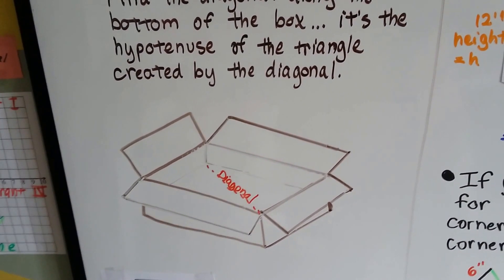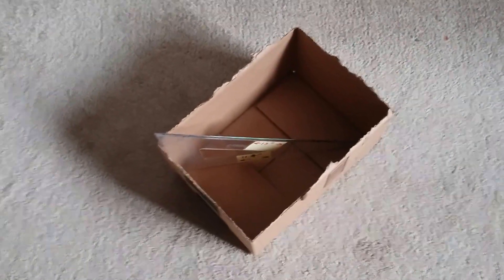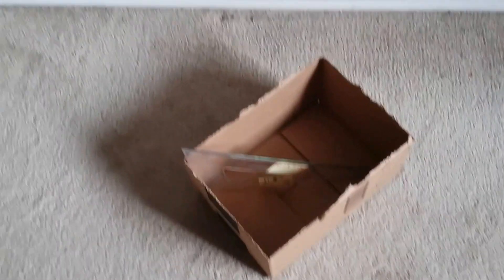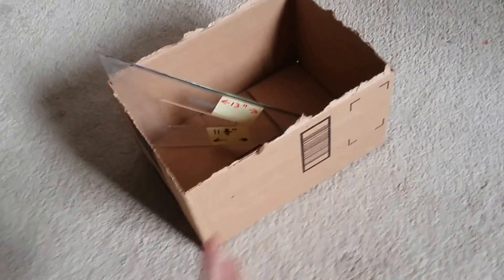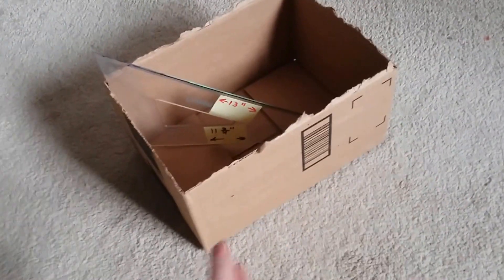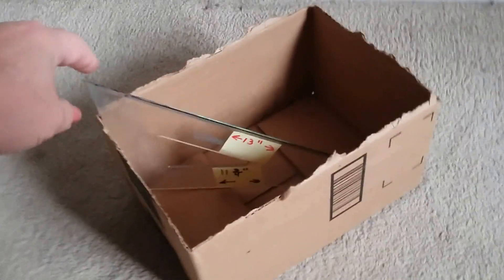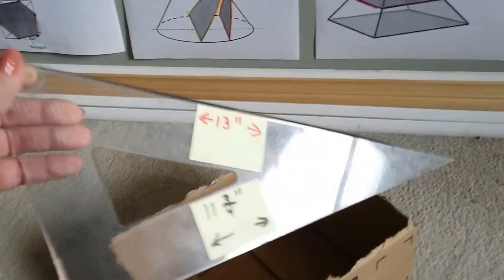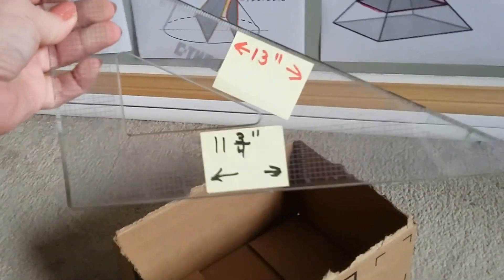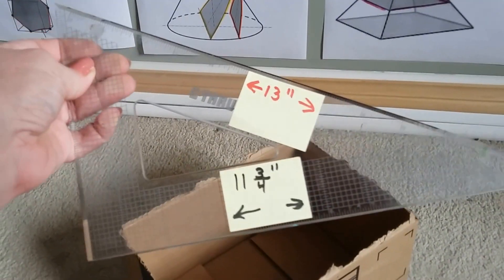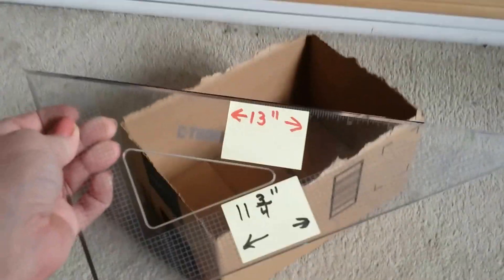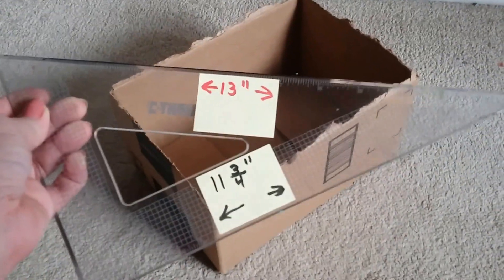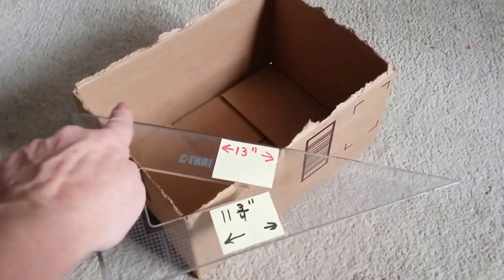Let me show you something real quick. Take a look at this box on my floor. I measured it right here and this is 10 inches. And I have this triangle that I use to draw on my dry erase board. The long side here is 13 inches — this is the hypotenuse of the triangle.